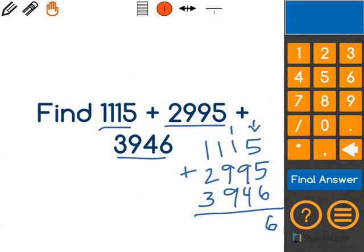1 plus 1 is 2 plus 9 is 11 plus 4 is 15. I carry over the 1 again. 1 plus 1 is 2 plus 9 is 11 again, plus 9 is 20.